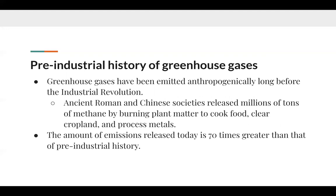Greenhouse gases have been emitted anthropogenically long before the industrial revolution. Ancient Roman and other societies released millions of tons of methane by burning plant matter to cook food, clear cropland, and process metals — releasing back carbon dioxide that plants would have otherwise absorbed. The amount of emissions released today is 70 times greater than pre-industrial history, mainly due to population growth, industrialization, and the use of far more resources.